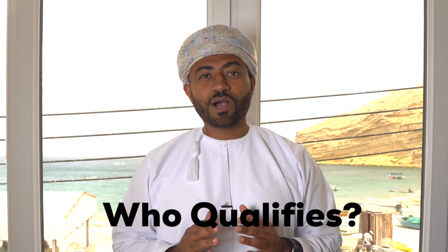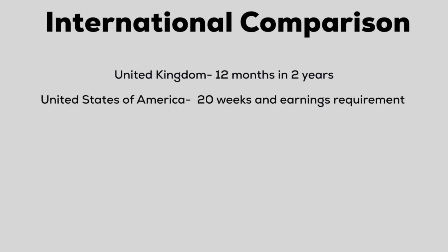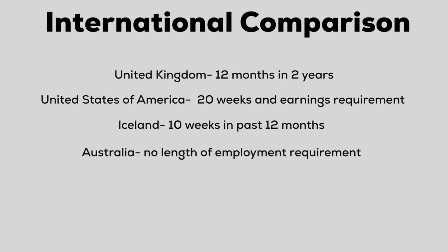I would like to talk about the features of the UI program and the policy options available. The first question is who qualifies for unemployment insurance? Most UI programs are designed to insure against economic downturns. To qualify, you must have lost your job because the firm is no longer in business or you are laid off due to downsizing. UI programs do not cover those that lost their job for a cause. There are requirements based on the duration of previous employment or contribution into the UI system. The United Kingdom requires 12 months of employment in the past 2 years. The US requires 20 weeks of employment and a minimum earnings threshold. Iceland requires employment for 10 weeks in the past year. Australia has no requirements.